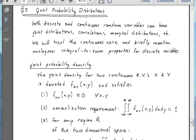Okay, this is a very important topic in probability and statistics. It is about joint probability distributions. We can construct joint probability distributions for both continuous and discrete random variables.